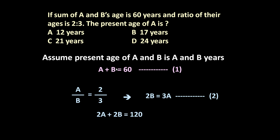2A plus 2B equals 120, but we know 2B equals 3A. So put this 3A in this equation, so 2A plus 3A equals 120, it means A equals 24 and B equals 36.